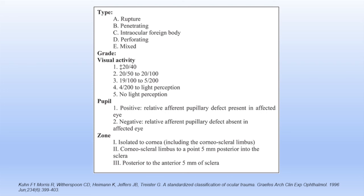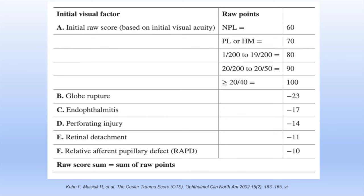For better understanding, we have graded injuries by type and severity based on visual acuity and zone of involvement. Using the BETT classification, grade ranges based on visual acuity: less than 20/40, 20/50 to 20/100, 19/100 to 5/200, 4/200 to light perception, and no light perception. The pupil assessment covers presence or absence of relative afferent pupillary defect (RAPD). Zones are divided into: zone one restricted to the corneoscleral limbus, zone two from limbus to 5 mm into sclera, and zone three beyond 5 mm into sclera.